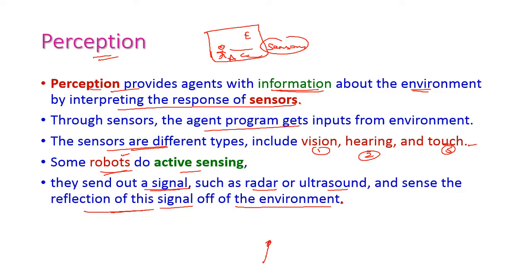The robot will send the ultrasound and that will hit an object, and that will be reflected back to the robot. So this is called active sensing.